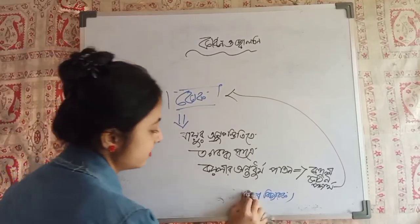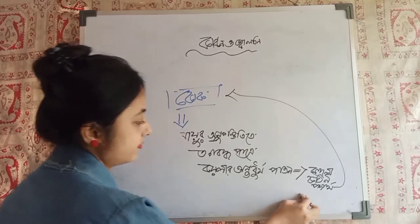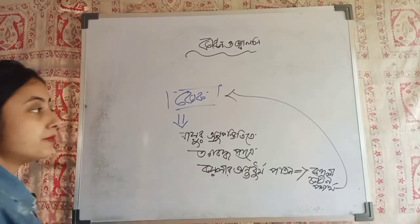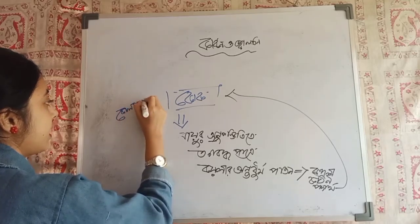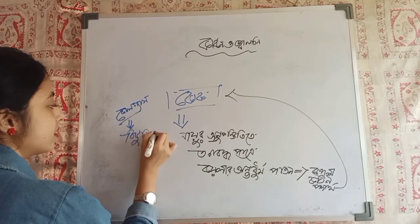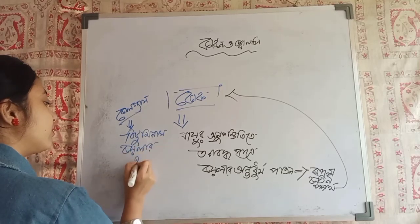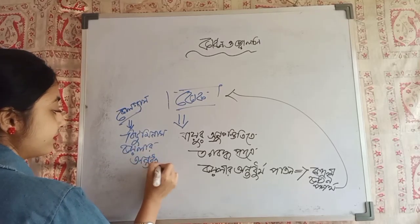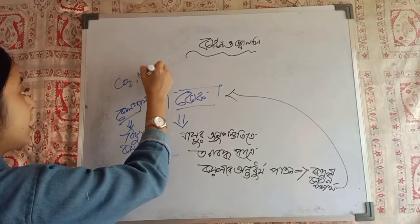Coal gas is the same as coal gas. You can see that coal gas is the same as coal gas. The coal gas is being given as CO2, NH3, and ACN.